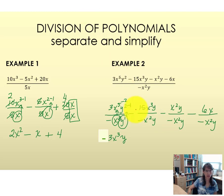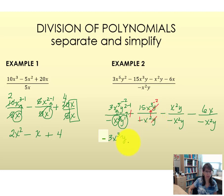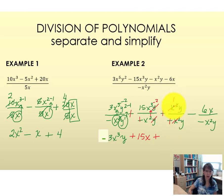For the second term, we have subtraction and a negative denominator, so that becomes plus. The coefficient is 15. Comparing bases of x: 2 is smaller, shifting up as minus 2, giving x to the 3 minus 2, which is x to the 1. Bases of y are identical, so y reduces to 1. That gives plus 15x. For the third term, subtraction divided by negative becomes addition. X squared over x squared is identical, reducing to 1. Y over y is identical, reducing to 1. So that term is simply plus 1.